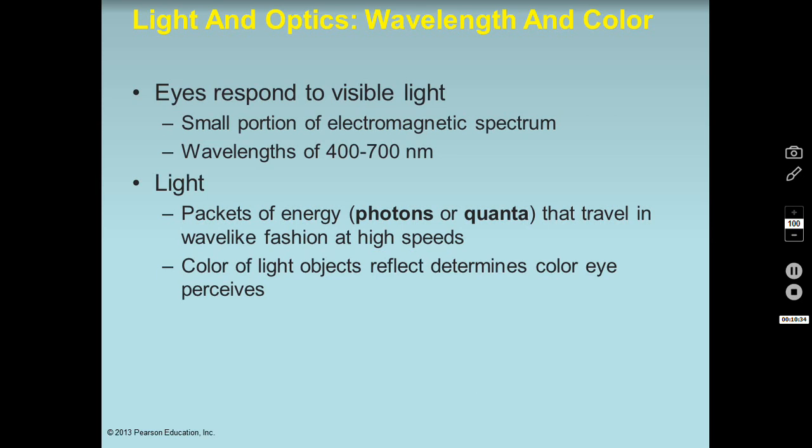Light travels as photons — it acts like a particle and like a wave. It's a discrete little packet of energy, a photon, but travels in a wave-like fashion at an incredibly fast speed. We perceive color because of what colors an object reflects. Everything absorbs some colors, and the colors we perceive are not the colors the object absorbs, but the colors the object reflects.